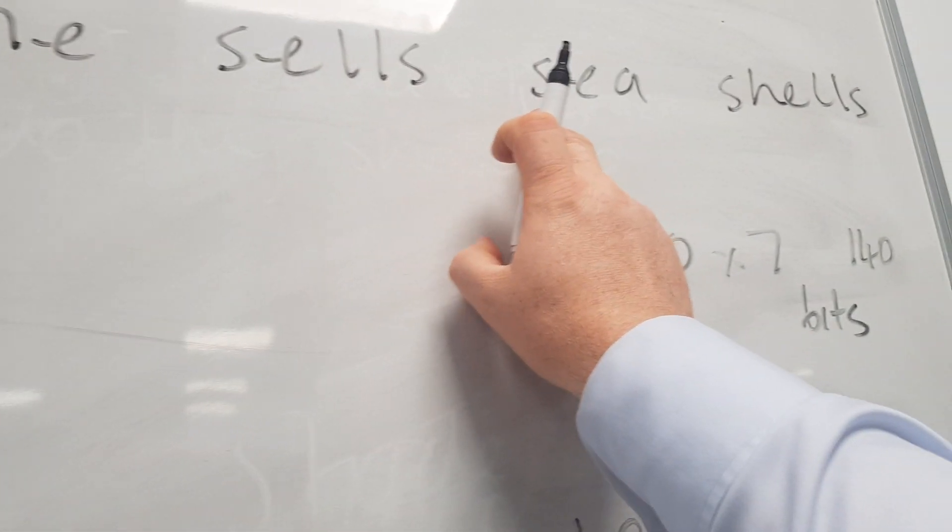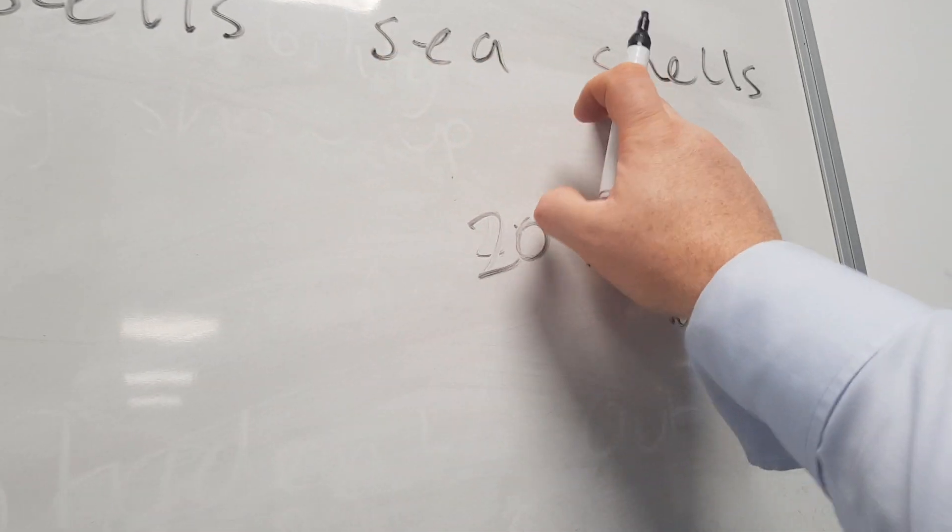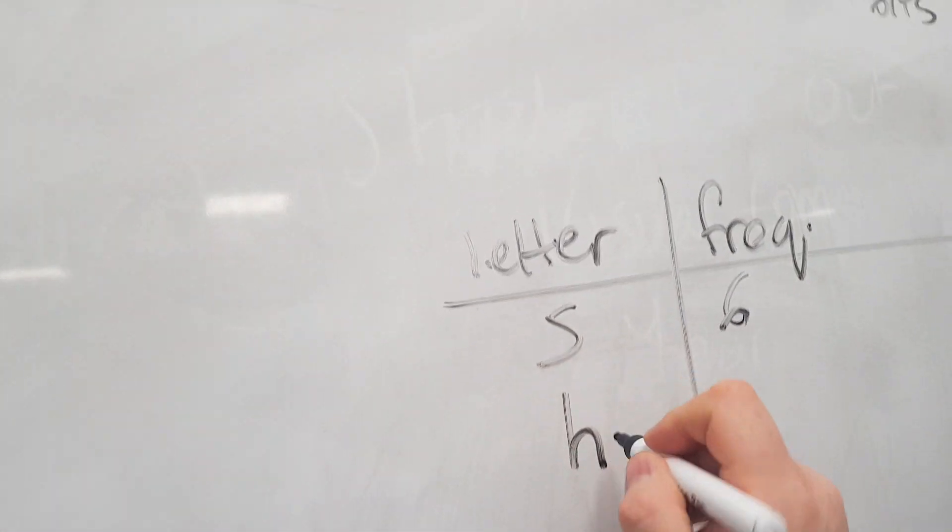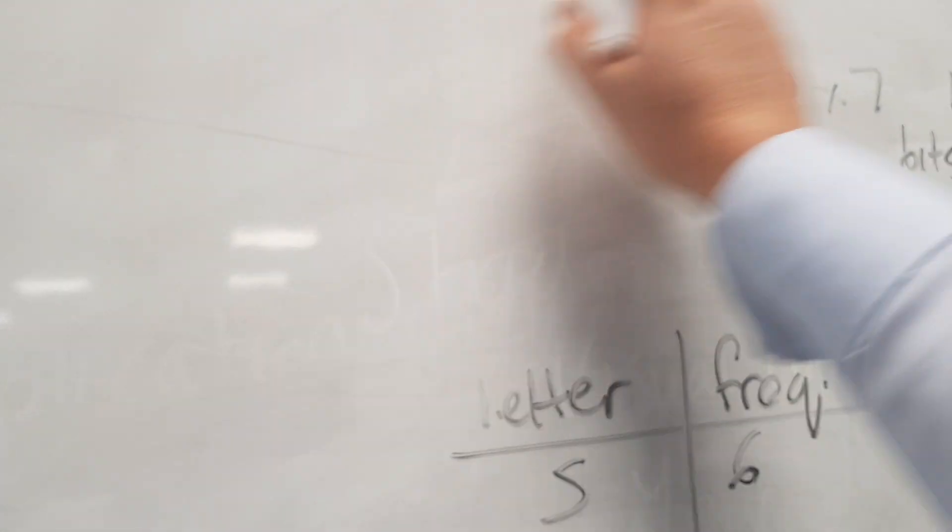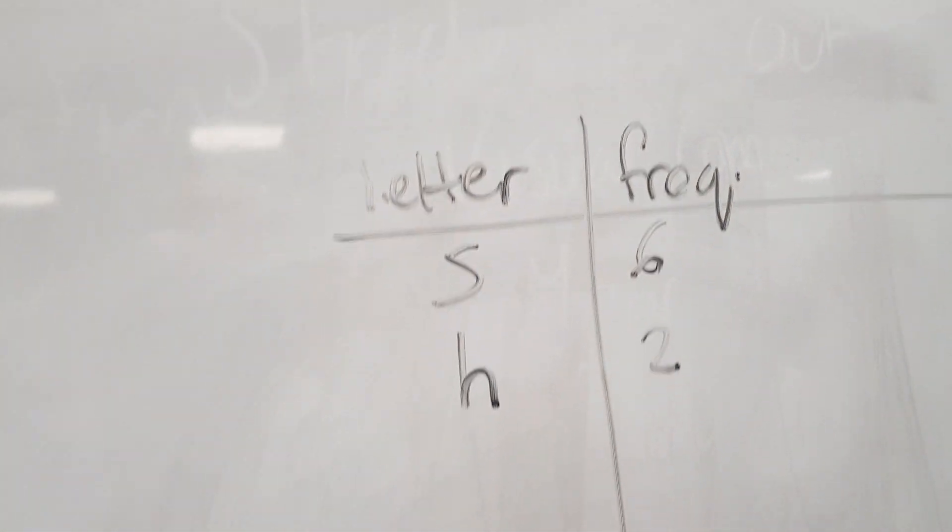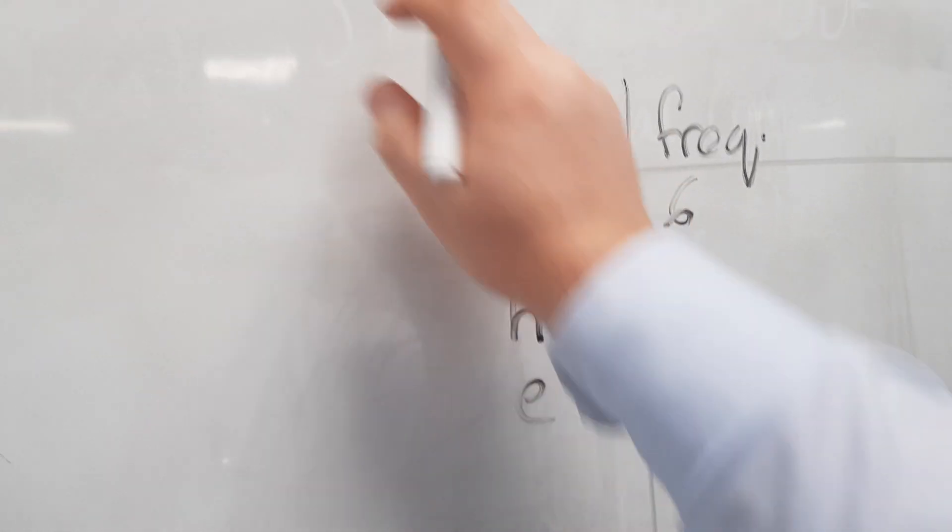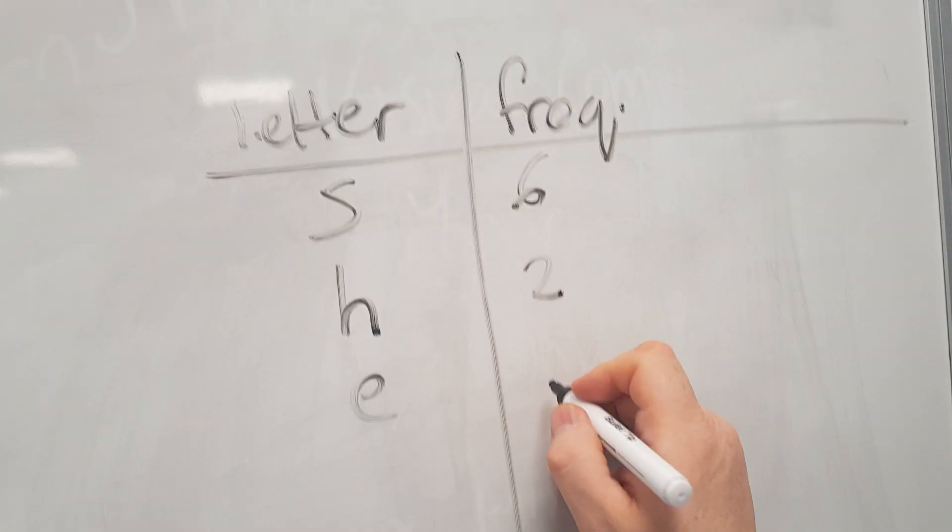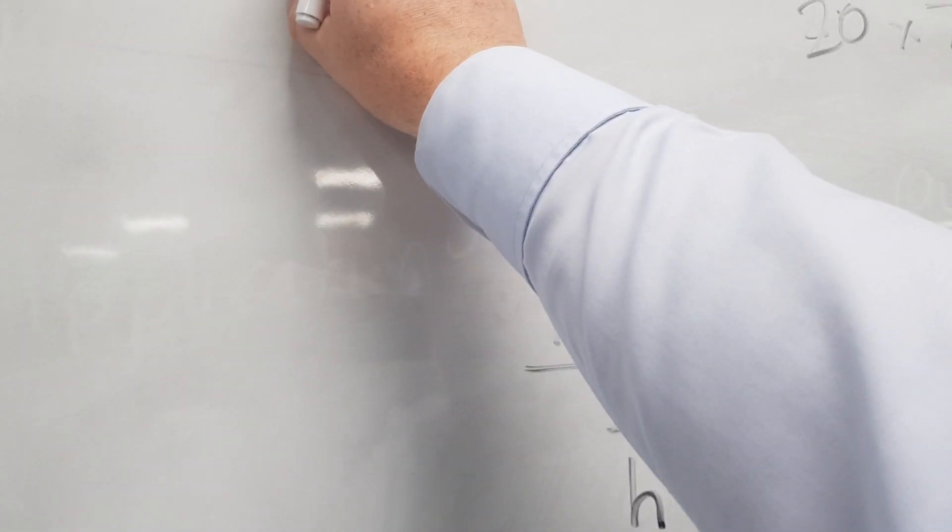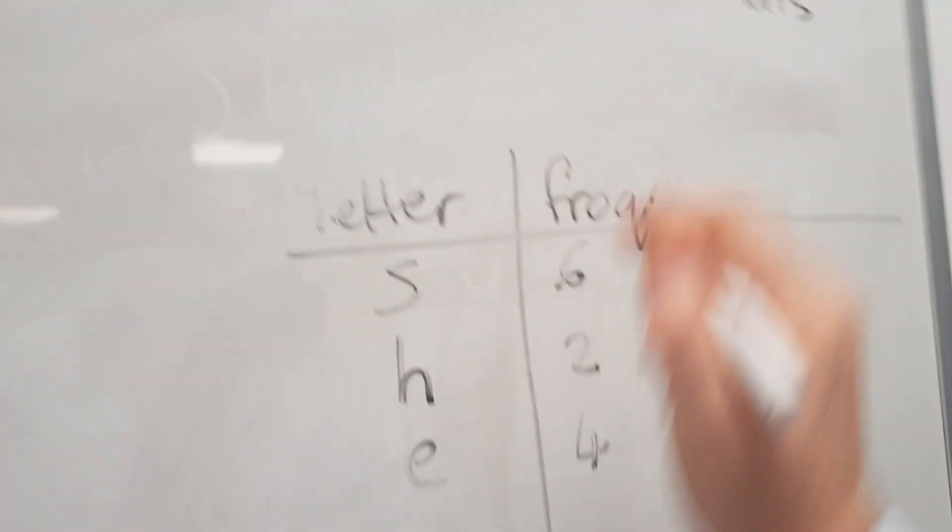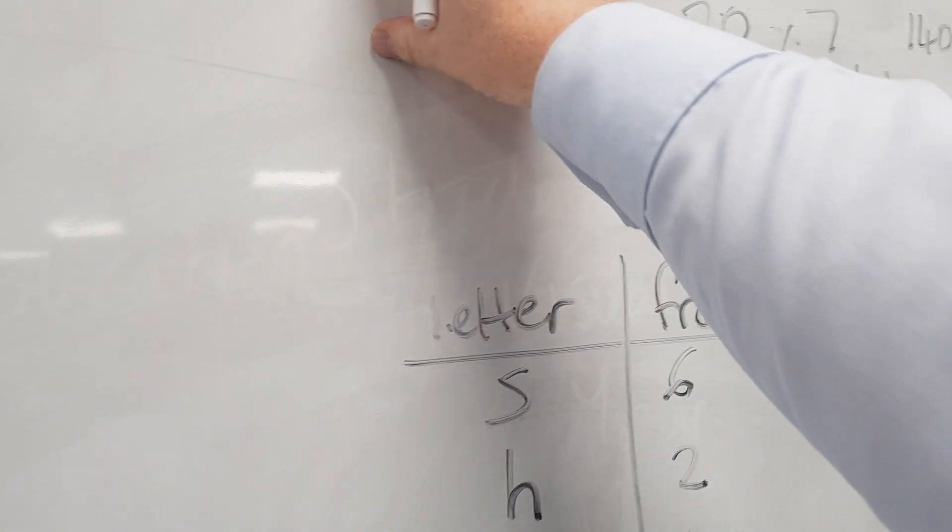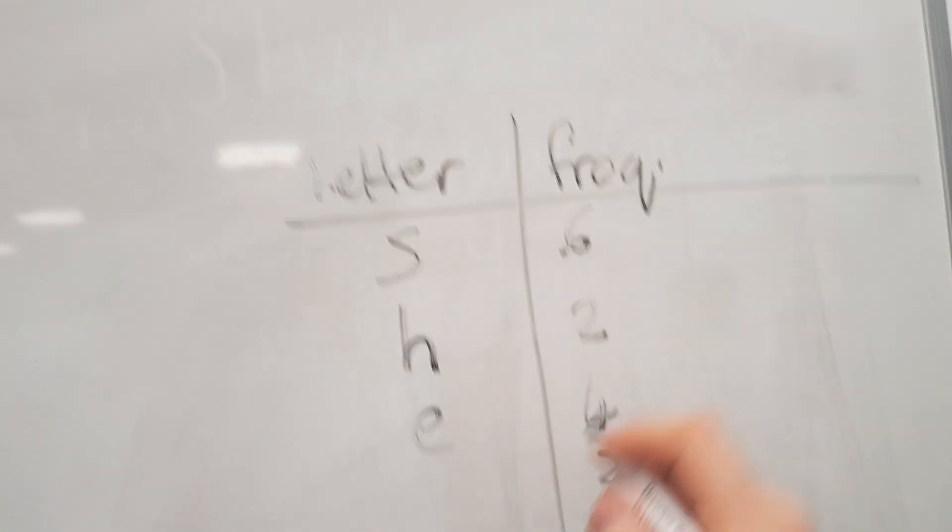So we've got S one two three four five six. We've got H which occurs twice. We've got E which occurs one two three four times. Space is one two three. L one two three four. And then we've got A which is one.